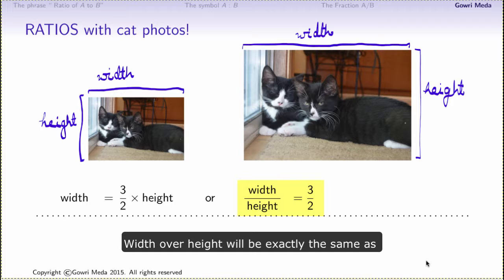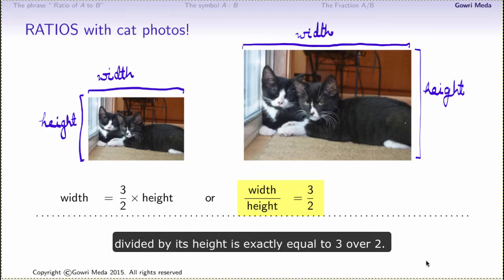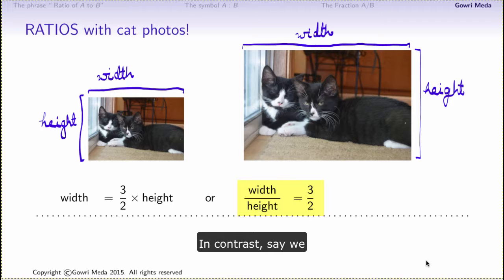Same thing for the second image. Width over height will be exactly the same as 3 over 2. What I am emphasizing here is that for each image, the width divided by its height is exactly equal to 3 over 2.